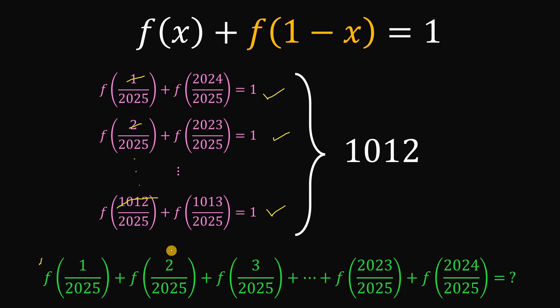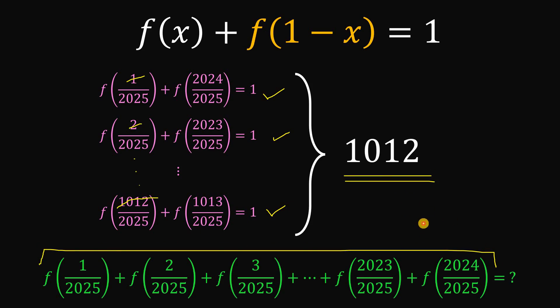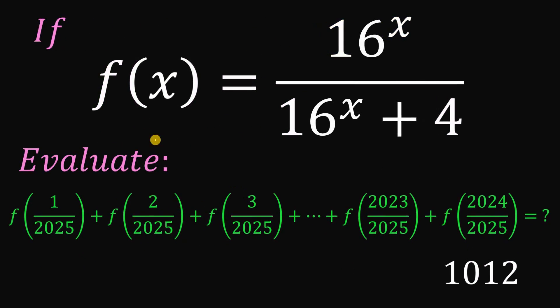Therefore, evaluating the entire expression gives a total of 1012. So if f of x equals 16 raised to the power of x over 16 raised to the power of x plus 4, then the value of f of 1 over 2025 plus f of 2 over 2025 up to f of 2024 over 2025 is 1012. And as always, we are done.